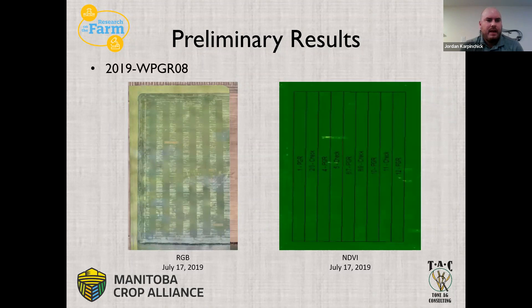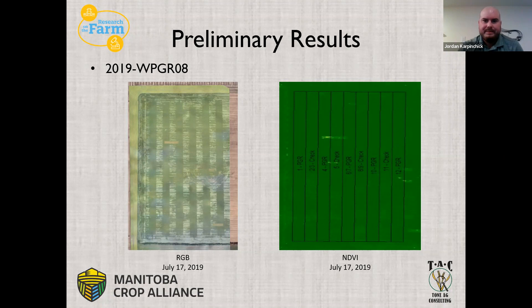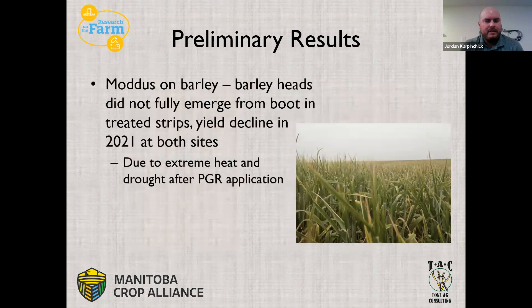NDVI drone imagery was flown on July 17th at our Wawanasa site — you can really see on the RGB image where the PGR was applied and where it wasn't in terms of reflectance from the drone sensors. This trial resulted in a 3.5 bushel increase in yield. The main takeaway is that the untreated strips could only be combined in one direction without risk of severe losses due to lodged wheat. If you had to harvest the whole field in only one direction, that would basically double your harvest time — a significant practical impact.